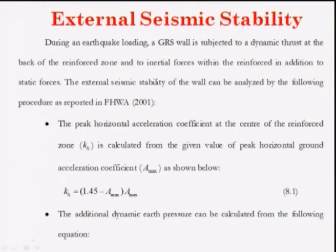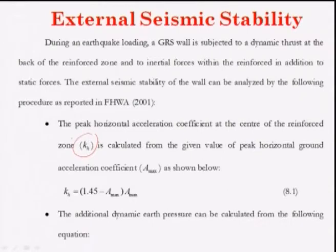The external seismic stability of the wall can be analyzed by the procedure given by FHWA 2001. The peak horizontal ground acceleration coefficient k_h at the center of the reinforced zone is calculated from the peak horizontal ground acceleration coefficient A_max as: k_h = (1.45 − A_max) · A_max.